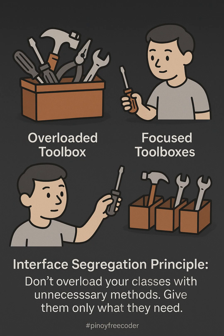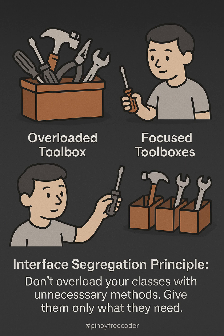Imagine a toolbox filled with all sorts of tools — screwdrivers, wrenches, hammers, and more. But not every job needs all these tools; it's bulky and inefficient. This is like a class being forced to use a big interface with methods it doesn't need. Now, picture several smaller toolboxes, each with just the tools needed for specific tasks. This is how the Interface Segregation Principle works — by creating focused, smaller interfaces that give classes only the methods they need, keeping things clean, efficient, and easy to manage.